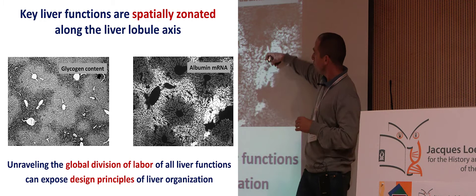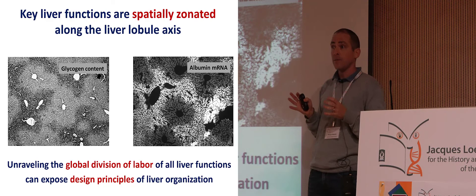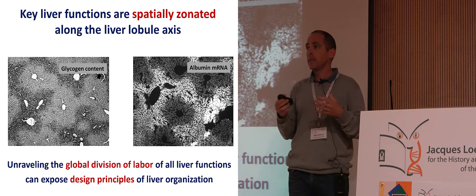This phenomenon has been discovered about a few decades ago — it's been termed metabolic zonation, and it's been documented for a few dozen genes. In my lab, what we wanted to do is achieve a global spatial map of the entire transcriptome of hepatocytes along this radial lobule axis. We believe this would help us understand the design principles of this organ.